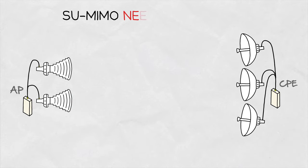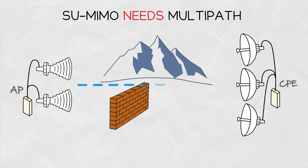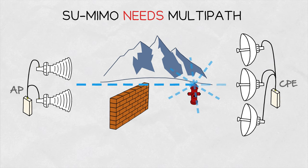SU-MIMO systems work poorly in line-of-sight scenarios. To operate well, they need a scattering-rich environment, so the signal is reflected, scattered and diffracted from the surroundings, ensuring that the signals arriving at different antennas are not the same.